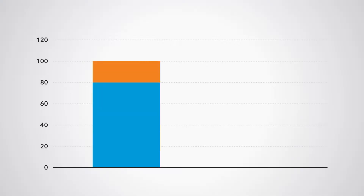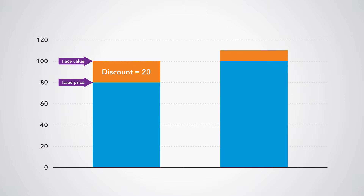Let's consider two examples to illustrate what we mean by debt securities issued at a discount or a premium. First, a zero coupon bond with a face value of 100 is issued for 80 — the discount is 20. Second, a zero coupon bond with a face value of 100 is issued at 110 — the premium is 10.